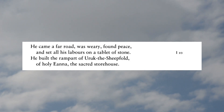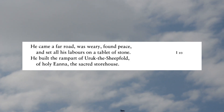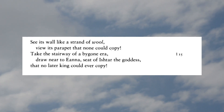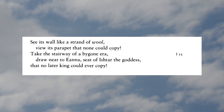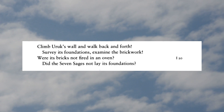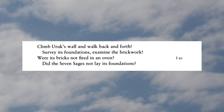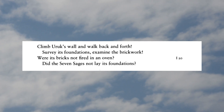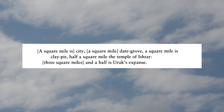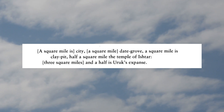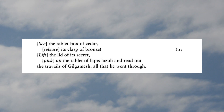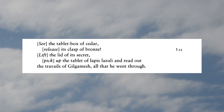'He built the rampart of Uruk, the sheepfold, of holy Ianna, the sacred storehouse. See its wall like a strand of wool. View its parapet that none could copy. Take the stairway of a bygone era. Draw near to Ianna, seat of Ishtar the goddess, that no later king could ever copy. Climb Uruk's wall and walk back and forth. Survey its foundation. Examine the brickwork. Were its bricks not fired in an oven? Did the seven sages not lay its foundation? A square mile is city. A square mile date grove. A square mile is clay pit. Half a square mile the temple of Ishtar. Three square miles and a half is Uruk's expanse. See the tablet box of cedar. Release its clasp of bronze. Lift the lid of its secret. Pick up the tablet of lapis lazuli and read out the travails of Gilgamesh, all that he went through.'